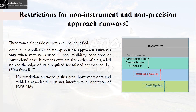Zone 3 is applicable only to non-precision approach runways when the runway is being used in poor visibility conditions or lower cloud base. It extends from the edge of the graded portion of the strip to the end of the runway strip — as mentioned in ASM Part 6, this distance is up to 150 meters, though the strip extends to a distance of 140 meters. There is no restriction on work being carried out in this zone; however, vehicles associated with the works must not intervene with the operation of nav aids.